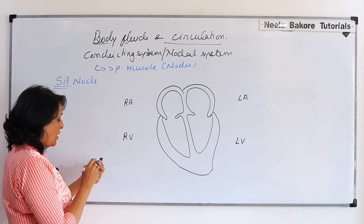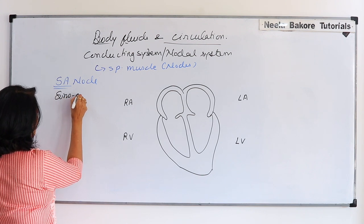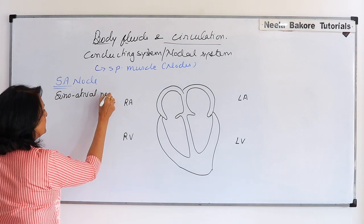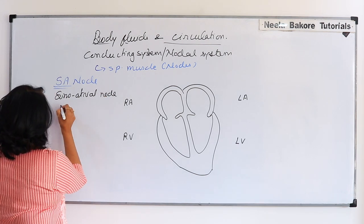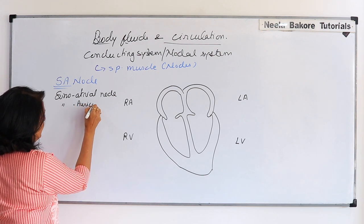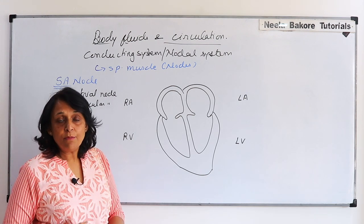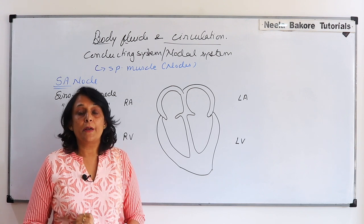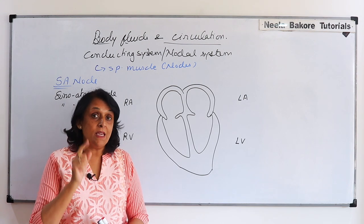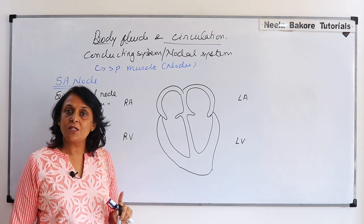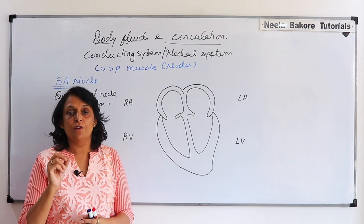SA node's full form is sino-atrial node. We can also say sino-auricular node. This is also a specialized muscle. In our heart, the message or stimulus that is generated for the heart to beat, contract, or pump blood, comes from the muscles. This whole system is muscular.